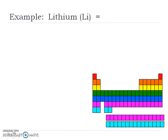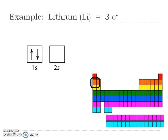Now let's look at lithium. Find it on your periodic table — it has three electrons. The 1S is going to be filled with one arrow up and one arrow down. What comes next? Looking at the orbital filling diagram, the next energy is the 2S orbital — again, only one box because S only has one orbital. So arrow up, and that's it. That's three electrons — done with lithium.